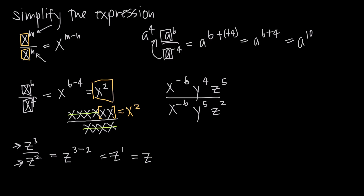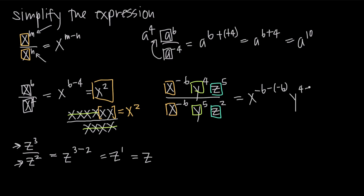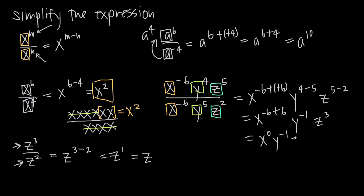Let's look at something more complicated. We have x to the negative six, y to the four, z to the fifth in the numerator, and x to the negative six, y to the five, z to the two in the denominator. Since these are all multiplied together, we can look at like bases separately. For x: x to the negative six over x to the negative six gives x to the negative six minus a negative six. For y: y to the four over y to the five gives y to the four minus five. For z: z to the fifth over z squared gives z to the five minus two. Simplifying: negative six minus negative six equals zero, so we get x to the zero; four minus five gives y to the negative one; five minus two gives z cubed.